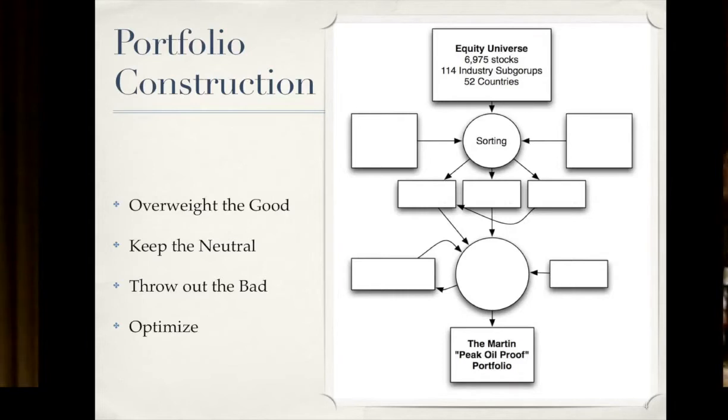So what I did to sort these out, is I looked first, I did a backwards looking quantitative analysis of all of these industry subgroups, looking at how they were affected by rising oil prices in the past, looked at their correlation oil prices, their beta. And then I supplemented that with a qualitative forward looking analysis. So I looked at some of those trends that I was just talking about, that people here have been talking about, and looked at how those trends would affect various industry subgroups into the future. I combined those to throw out the bad, invest in the good, and keep the neutral.